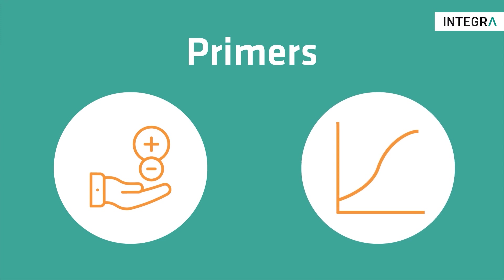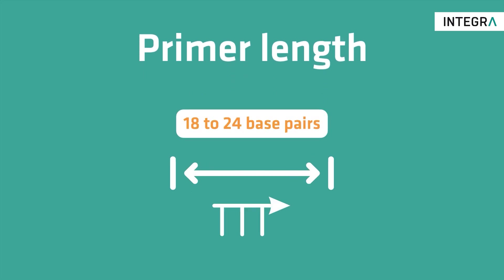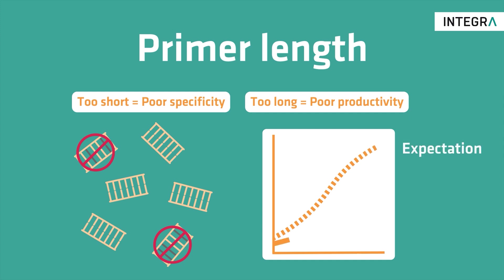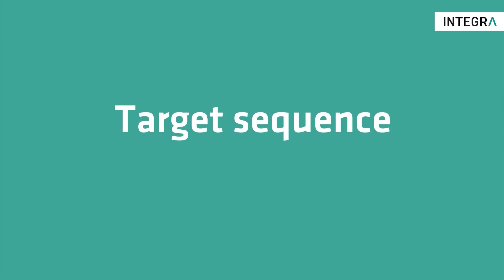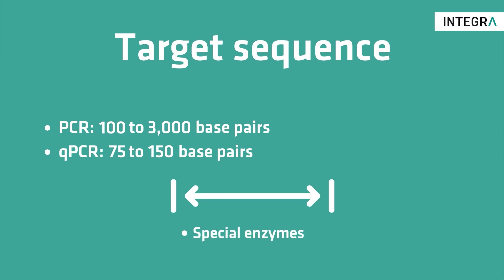This video will explain what the optimal values for each of these parameters are and how they affect your PCR assay. The optimal primer length is between 18 and 24 base pairs. Shorter primers may lead to nonspecific amplification, while longer primers anneal less efficiently to the template DNA, resulting in a lower amount of PCR product. The target sequence to be amplified should ideally be between 100 and 3000 base pairs for standard PCR assays, and 75 and 150 base pairs for qPCR assays. Longer sequences usually need special enzymes and reaction conditions to ensure they are completely and specifically amplified.